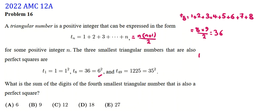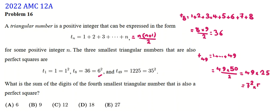For T_49, we calculate 1 to 49 using the formula n(n+1)/2: 49 × 50 / 2 = 49 × 25. Since 49 = 7² and 25 = 5², this equals 35², which is a perfect square. So T_49 = 35² is exactly the third triangular perfect square.